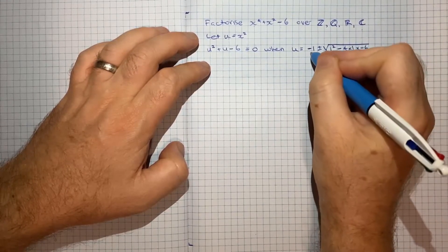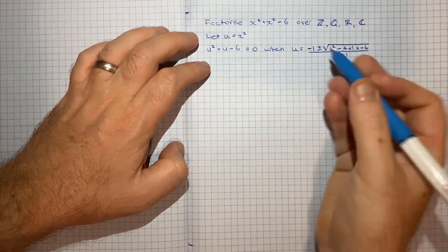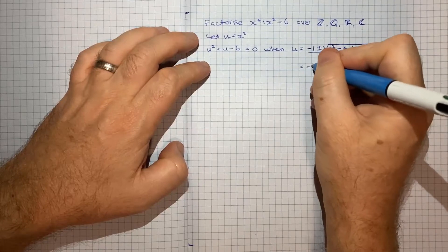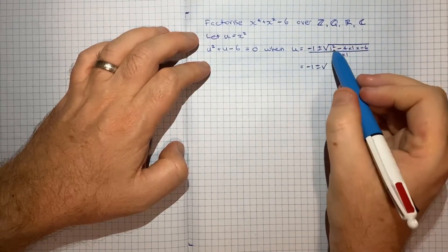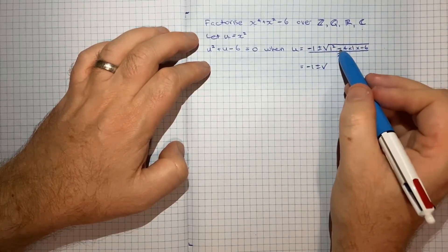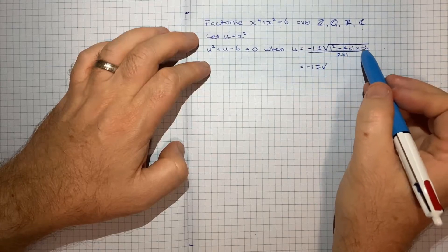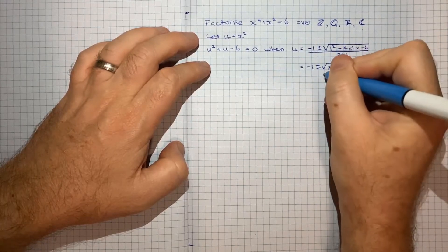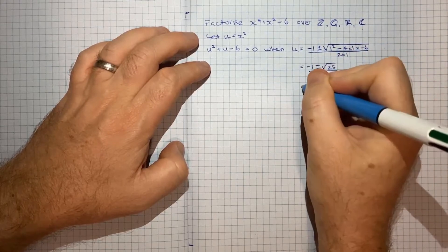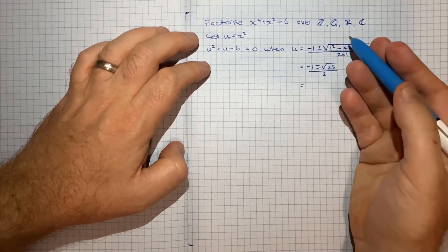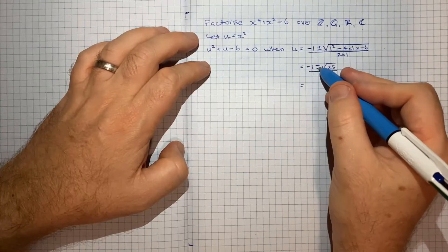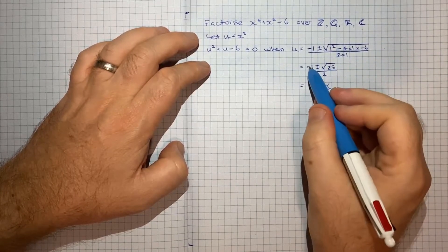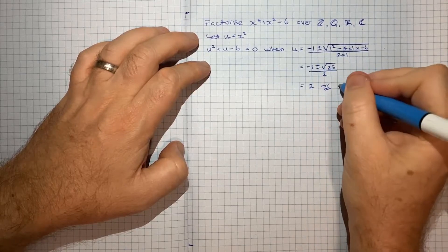So that's just using the classic quadratic formula. If we simplify this, we'll get negative 1 plus or minus root 25 on 2. Square root of 25 is simply 5, so minus 1 plus 5 is 4 on 2 is 2, and minus 1 minus 5 is minus 6 on 2 is negative 3.